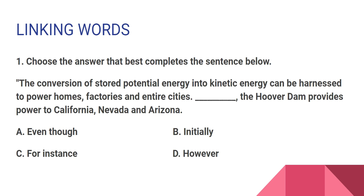The sentence here is: the conversion of stored potential energy — a kind of energy which is converted into kinetic energy, also known as motion energy or movement energy — can be harnessed. The word 'harnessed' means gathered or collected, so it can be gathered to power homes, factories, and entire cities. The electricity supply is needed to supply the building, factory, and city.